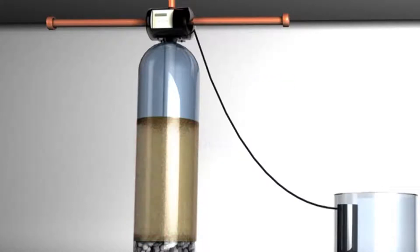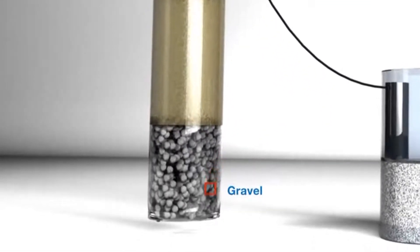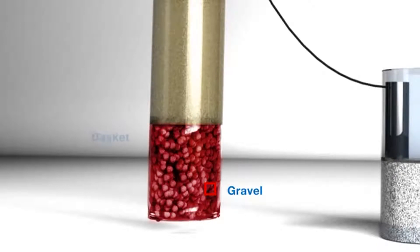Next, we have a layer of gravel. The gravel protects the lower basket of the dip tube. This basket keeps the resin from entering the dip tube and passing into the home. The gravel also allows water to flow through with ease.